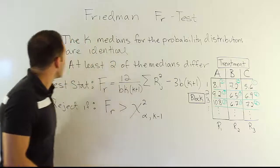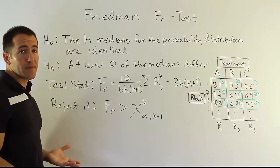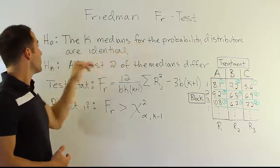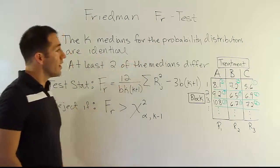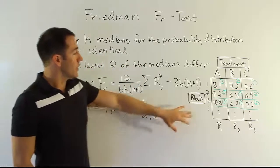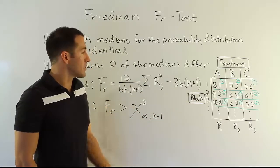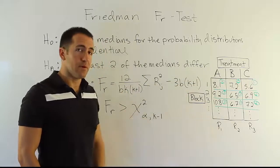So let's look at the hypothesis that we'll use. It's going to be very similar. These are, in fact, basically the same hypothesis as we used in the Kruskal-Wallis H-test. The K medians for the probability distributions are identical versus at least two of the medians differ. Remember that in these procedures, we're assuming no interaction effect, and we're basically essentially interested in the treatments, and we're just blocking out the differences that are among the subjects.